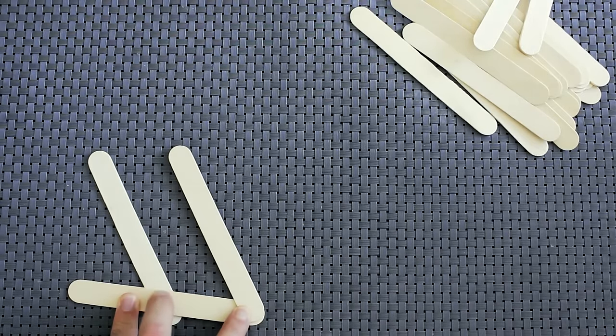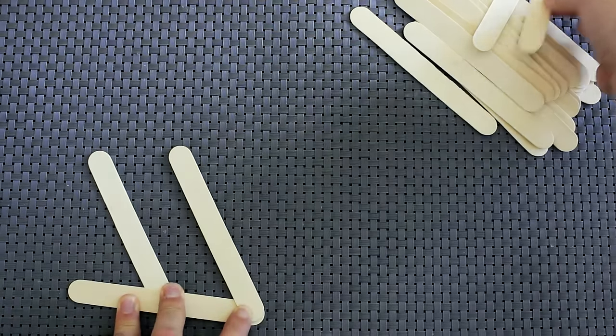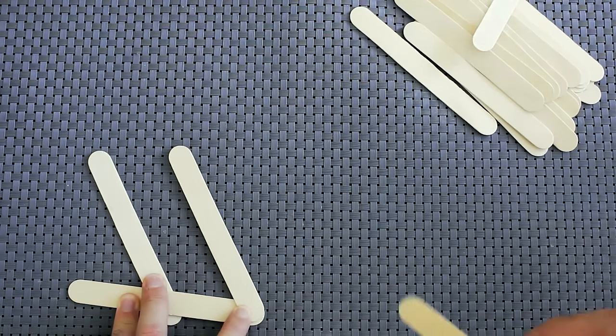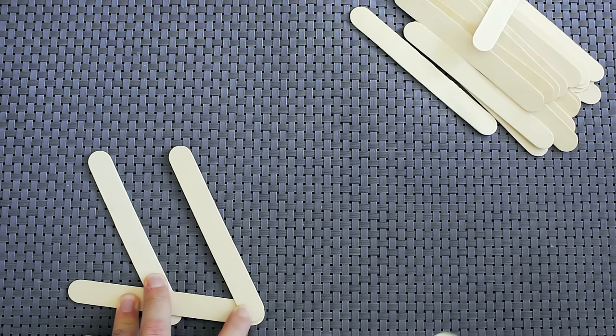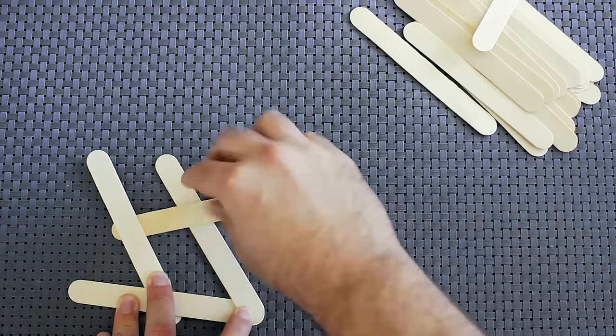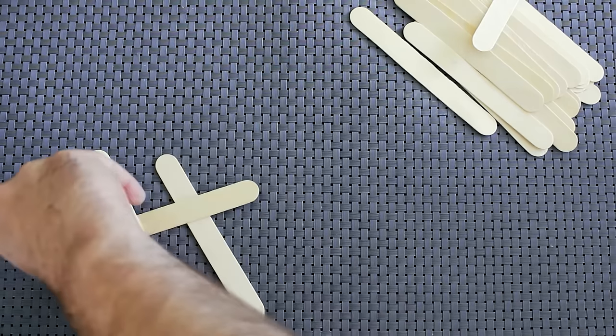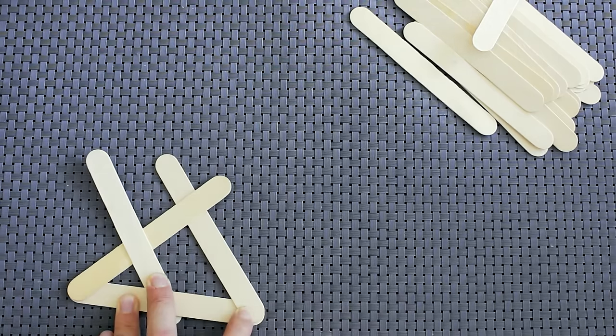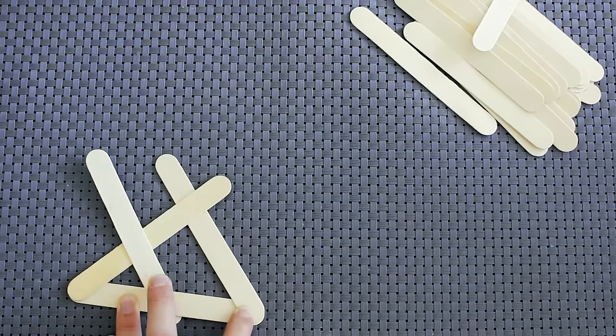Now you're going to take another popsicle stick and weave it under the middle popsicle stick, then make sure that it catches over top of that second popsicle stick that you laid, just like so.